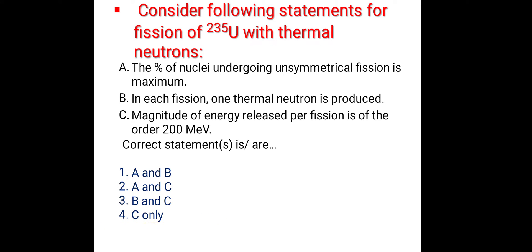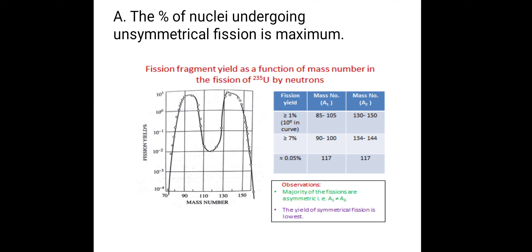We have to find the correct statements from these three statements. We will see the statements one by one. Statement A is: the percentage of nuclei undergoing unsymmetrical fission is maximum.